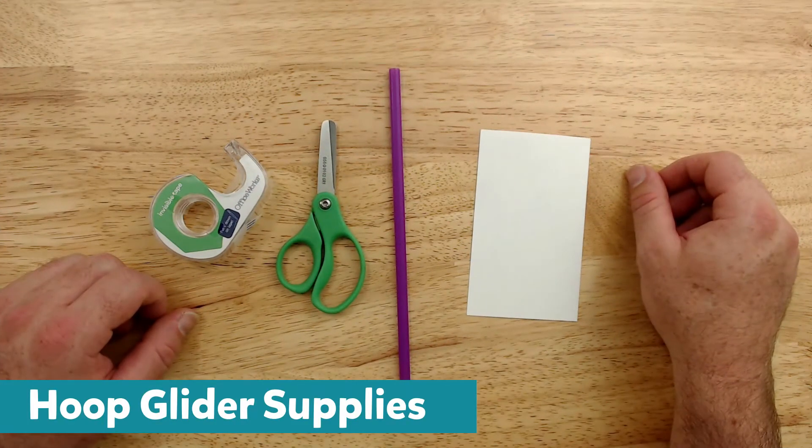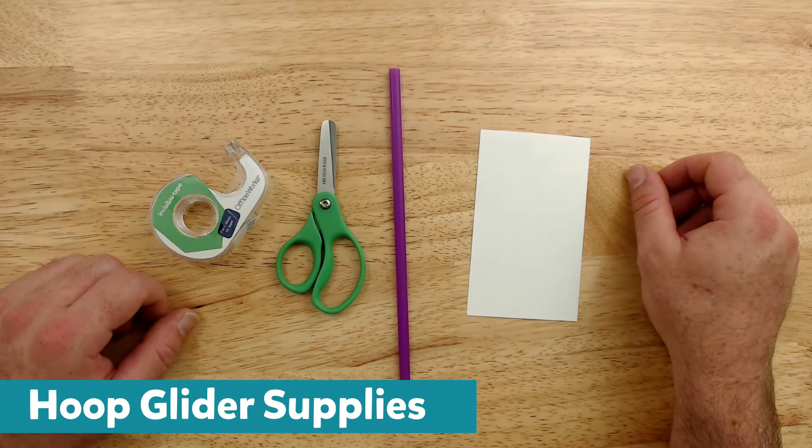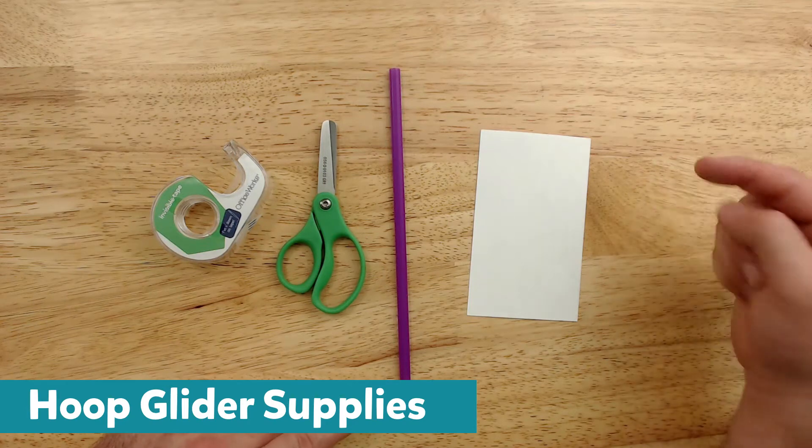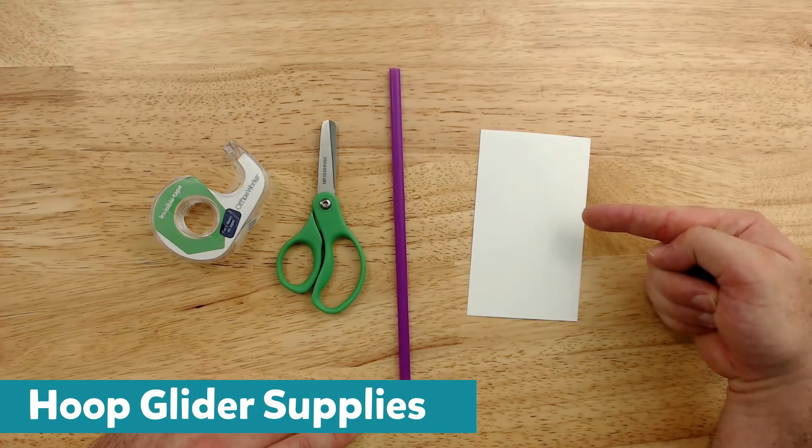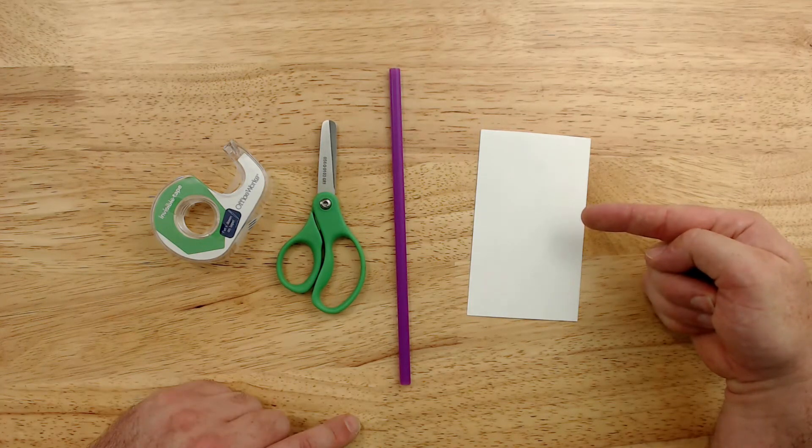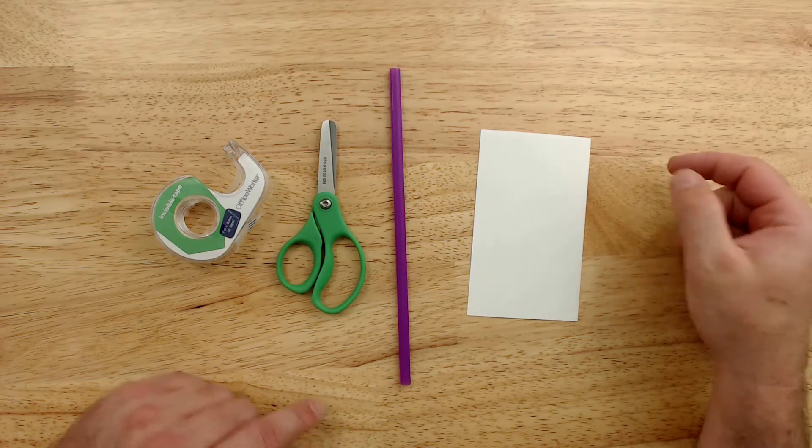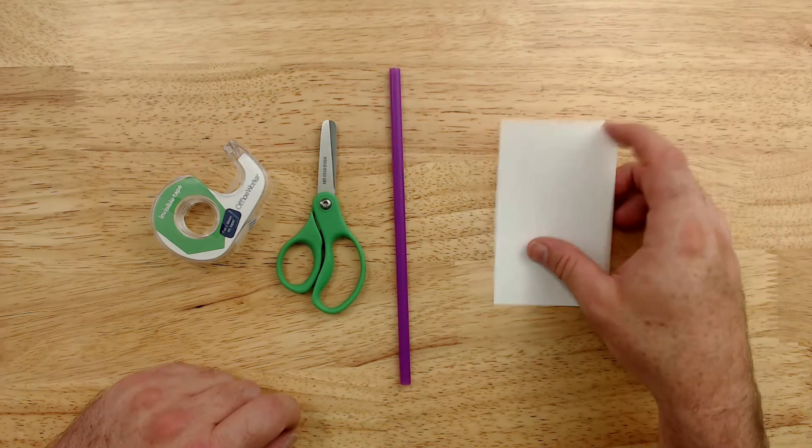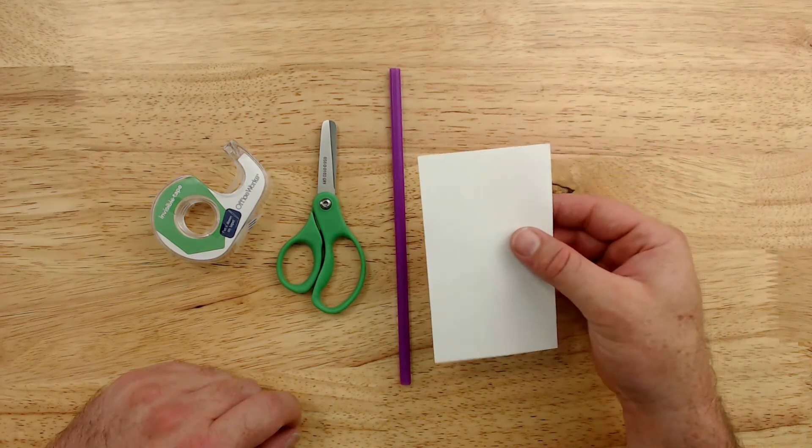All we need to do this project is clear tape, scissors, a straw, and a three by five card. So let's get started. First off, you need to take your three by five card and you need to cut it into three strips lengthwise.